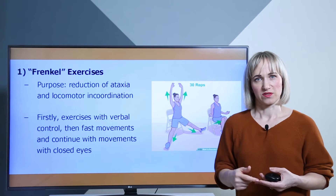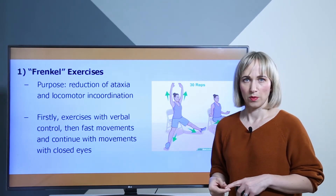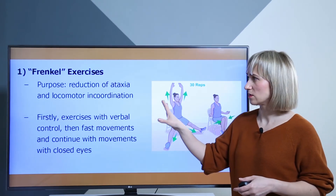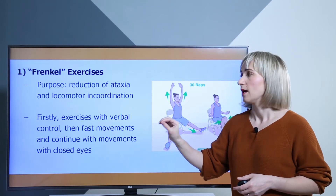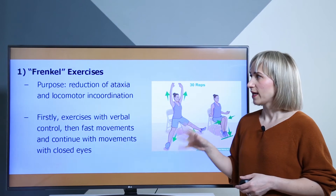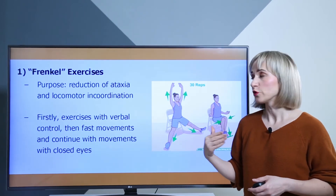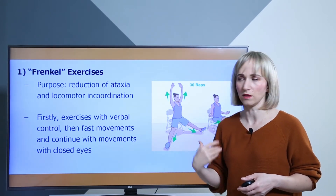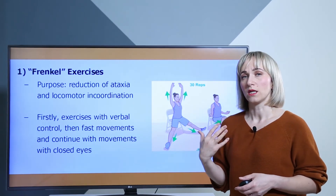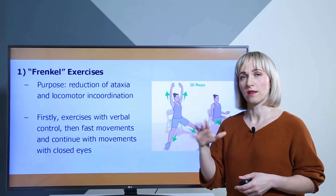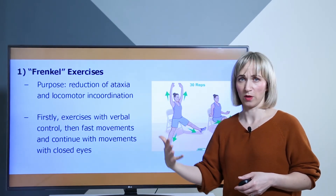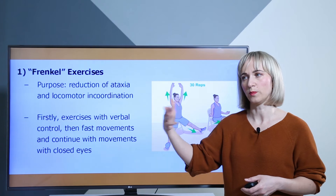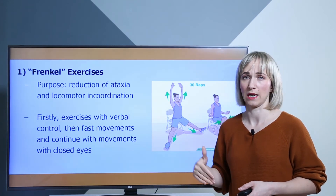We will discuss three types of exercises. The first are Frenkel exercises for patients with cerebellar disorders. The purpose of Frenkel exercises is the reduction of ataxia and locomotor incoordination. They begin with visual control — the patient can see the extremity or body in a mirror — then slow movements, then fast movements with verbal control, and finally movements with closed eyes.